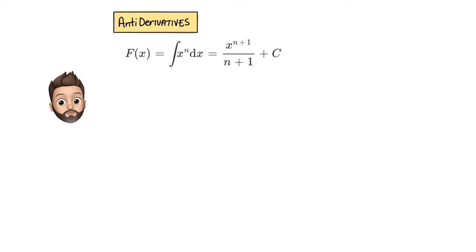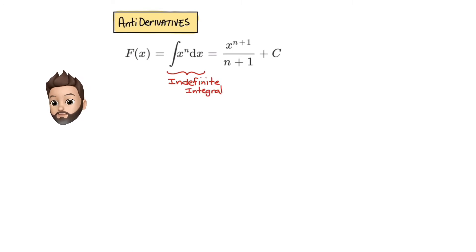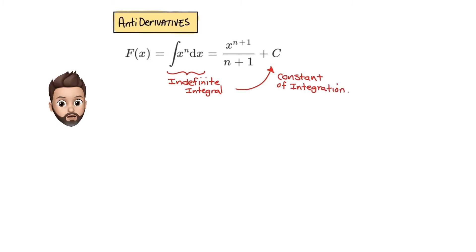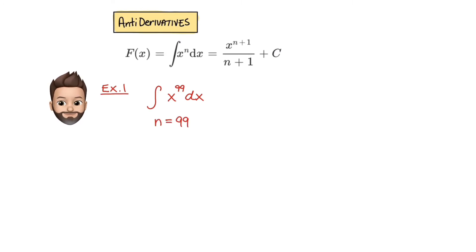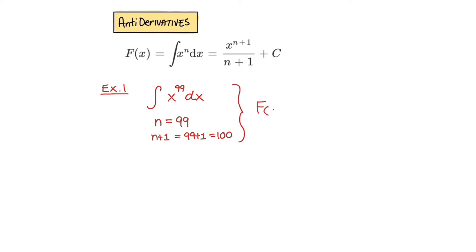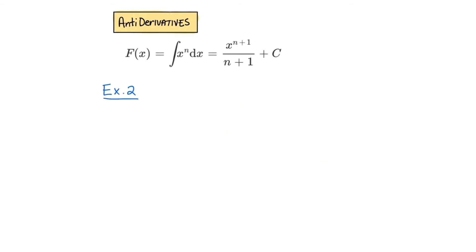Here's a classic formula for an anti-derivative. The anti-derivative of x to the nth power, where n is some integer, gives you x to the n plus 1 power divided by n plus 1, plus some constant of integration c. For example, let's take x to the 99th power. We integrate that with no limits of integration — this is an indefinite integral — and we want to find its anti-derivative, which we represent as capital F of x. Using this power rule, x to the 100 over 100 plus c is the anti-derivative we're looking for.